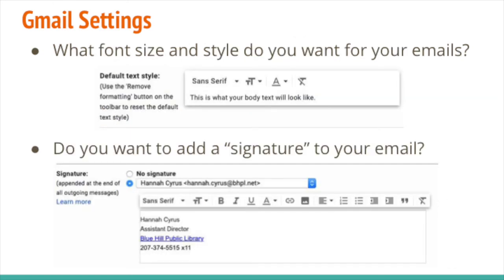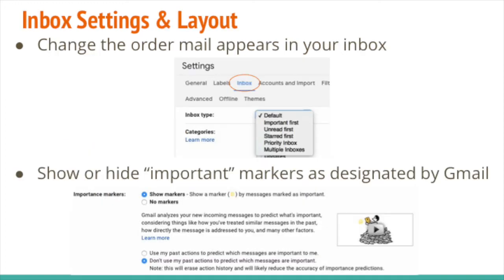You can customize the font size and style for all your emails. Those text editing composition tools let you change things in a specific email, but in your settings you can change what it defaults to — what it automatically is set to when you start a new email. So if you want all your email text to be bigger or in a different font without having to change it every time, go to 'Default text style' in your settings and set it there. You can also add a signature — a set of text that appears at the end of every email you send — with your name, title, and any contact information.